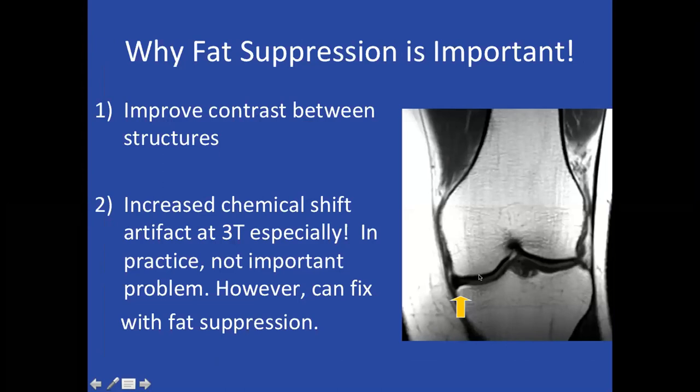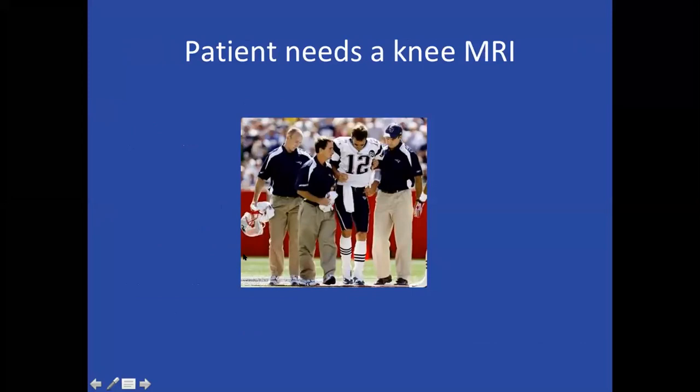Fat suppression is important because making fat black improves contrast between structures and shows anatomy well. A lot of our joint imaging is at 3T to maximize signal, but 3T produces more chemical shift artifact — for example, a rim of apparent signal that could be mistaken for edema. Fat suppression fixes this artifact, confirming it's not edema. So here's our patient: a football player who got injured needing a knee MRI. The first choice is what field strength to use.